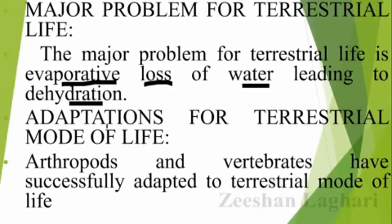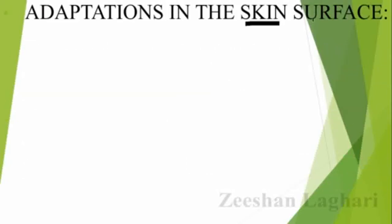What are the adaptations in terrestrial life? Arthropods and vertebrates have successfully adapted to the terrestrial mode of life. Arthropods include insects and crustaceans — animals with jointed legs. Both arthropods and vertebrates have some special characteristics that allow them to survive in the dry environment.